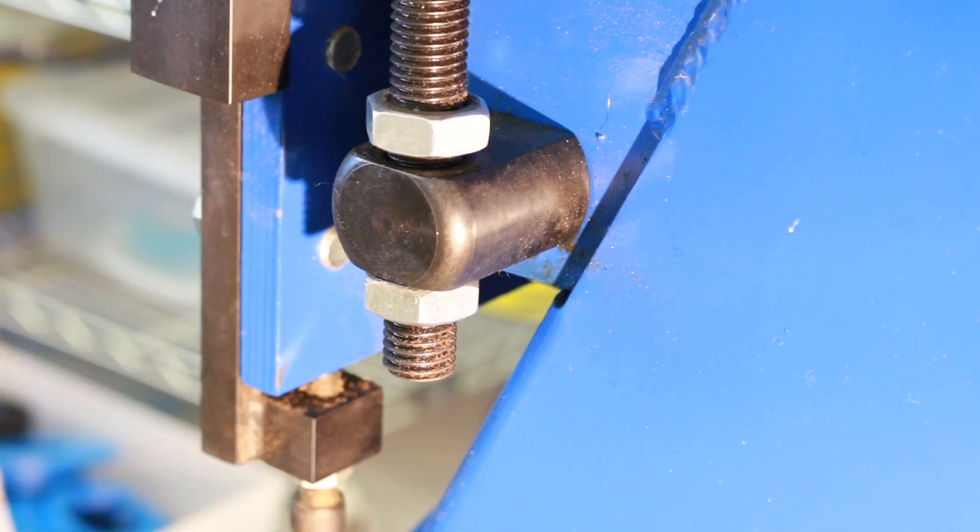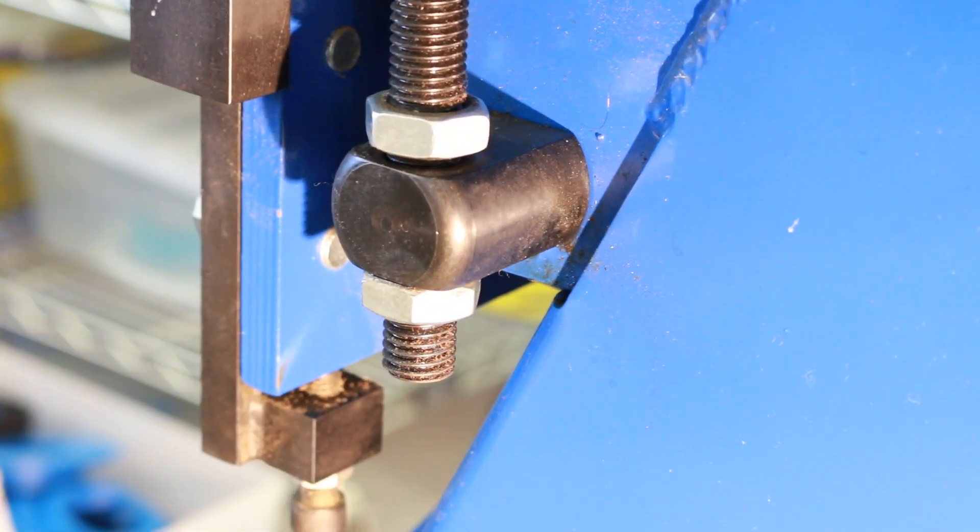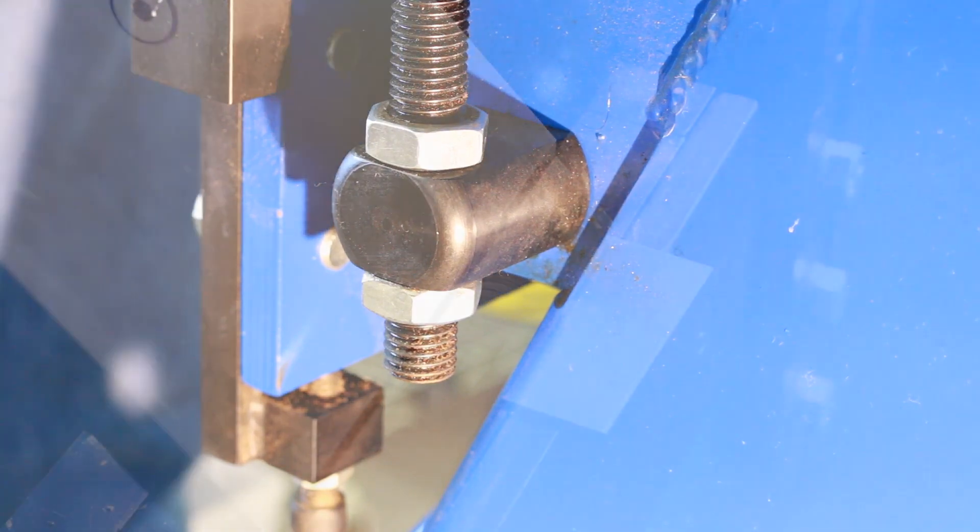Clamping pressure can be adjusted by the two nuts located on the stem of the locking cam. By adjusting the nuts up or down, the clamping pressure can be increased or decreased. Keep in mind that all adjustments need to be accomplished on both ends of the brake.